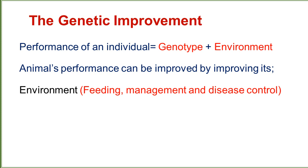If we talk about the factors involved in the environment, or what are the practices which we may improve to ultimately make the environment beneficial for the animal — feeding, management, and disease control. The most important are management and feeding; both factors play a very vital role in improving the environment for the animal.